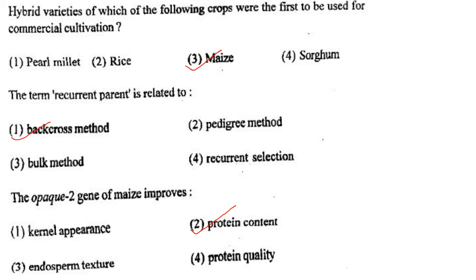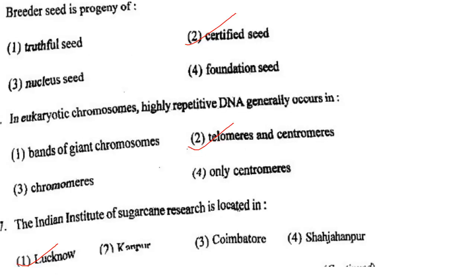Next one: The opaque-2 gene of maize improves option 1, kernel appearance; option 2, protein content; option 3, endosperm texture; option 4, protein quality. Answer is option 2: protein content.